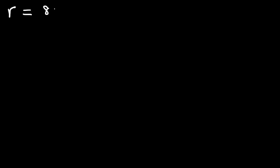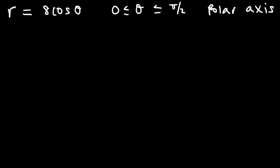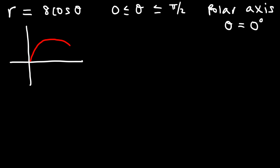Now let's try our second example. Let's say that r is 8 cosine theta, and the angle varies between 0 and pi over 2. This time we're going to rotate it about the polar axis, which is the same as the line where theta equals 0 degrees. Now, 8 cosine theta is going to be a circle along the x-axis, or the polar axis. So theta equals 0 is here, and theta equals pi over 2 is here, so our graph is bounded by this region. When we rotate it about the polar axis, we're going to get a sphere.